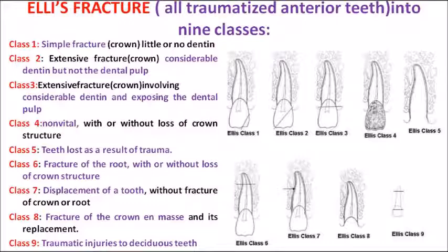In Class 3, there is exposure of the dental pulp along with considerable dentine involvement. In such cases, we can see bleeding at the site. Class 4 is when the entire tooth has become non-vital, and you can see discoloration on the surface of the tooth.